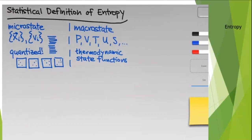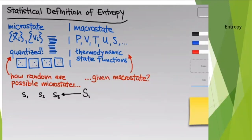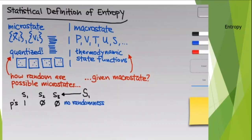Consider three possible microstates s1, s2, and s3 for a given macrostate. If microstate s1 has probability 1 and s2 and s3 have probability 0, we know exactly the microstate — the particles are frozen in space with zero velocity. There is no randomness, and so entropy is zero. When there is zero randomness in the possible microstates, entropy equals zero.